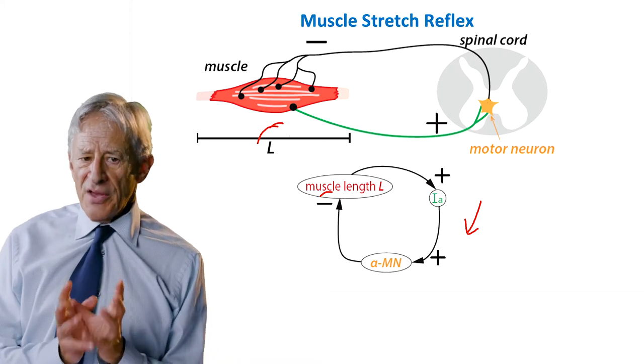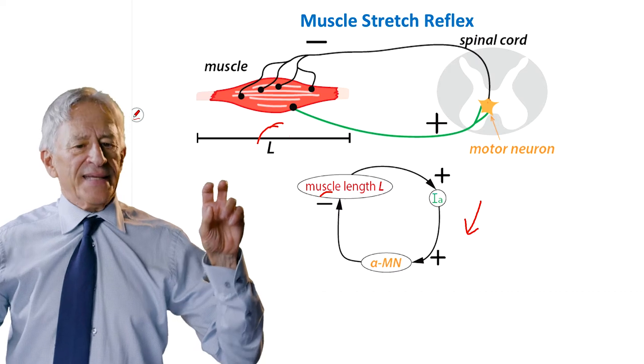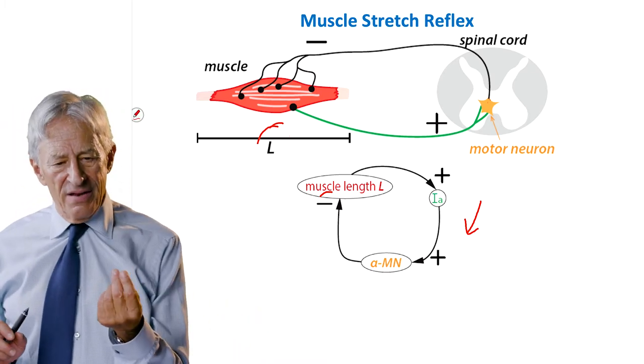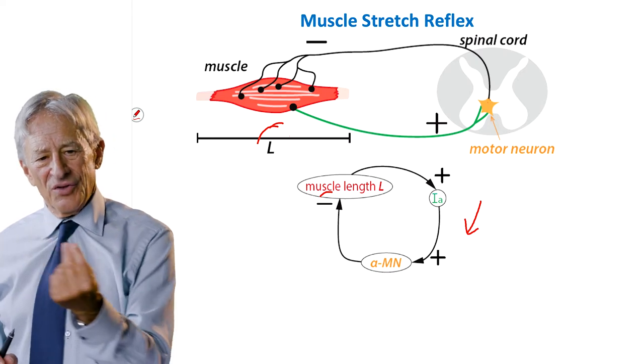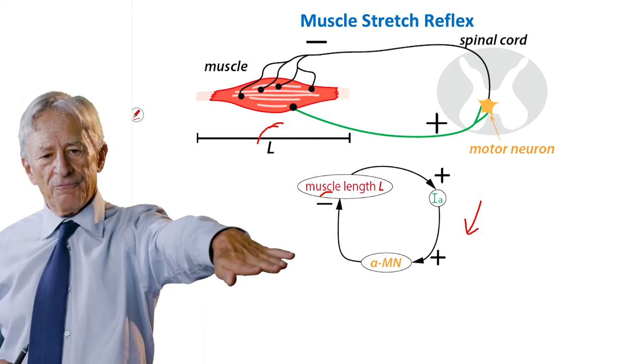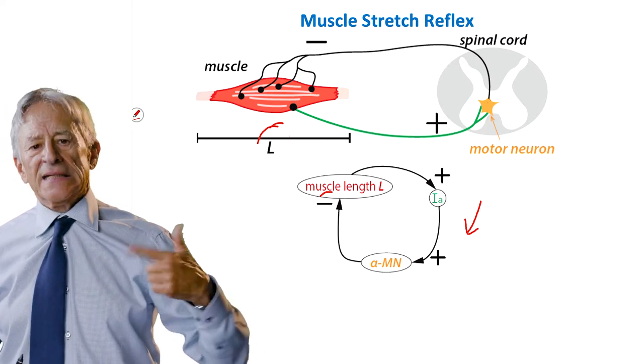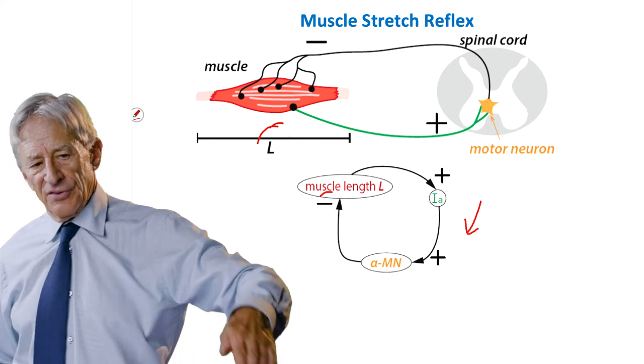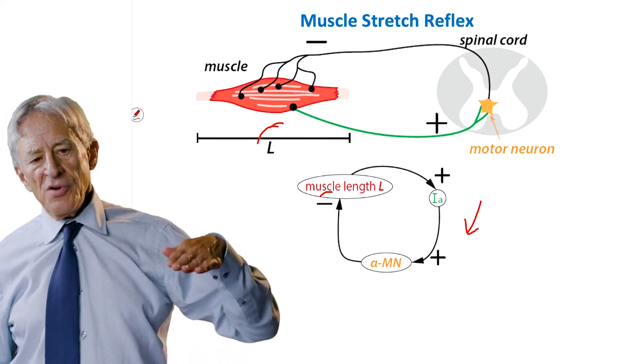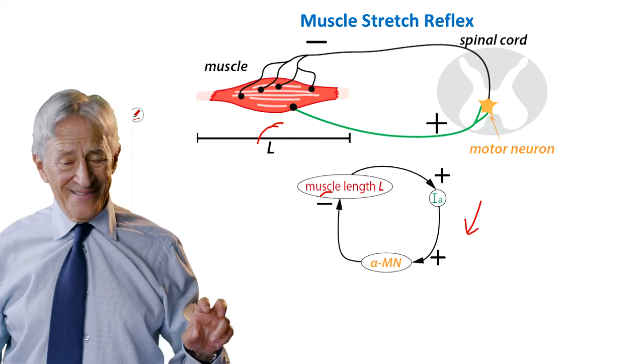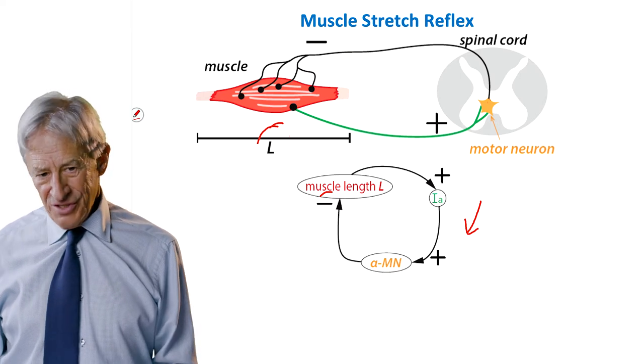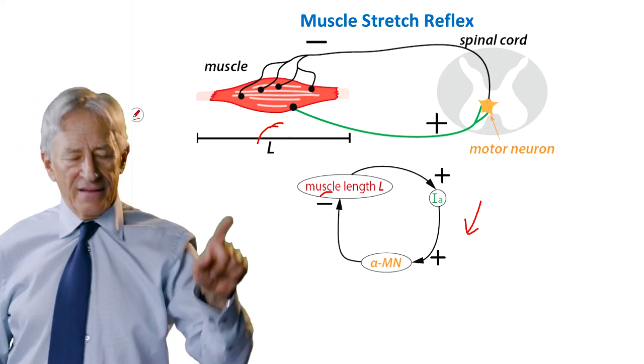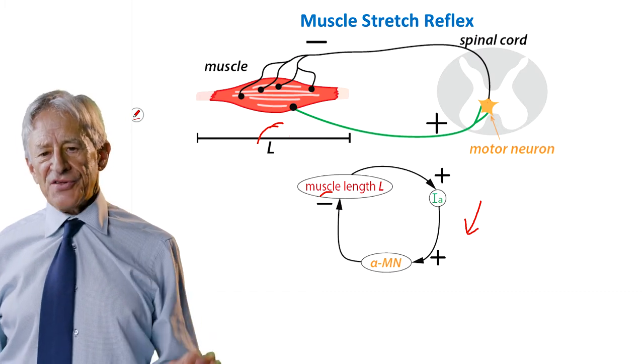For example, multiple sclerosis, MS, is a demyelinating disease. So what does demyelinating mean? Well, myelin is the insulation on the neuron, on the axon, the long axon of the neuron. And that insulation, which is myelin, enables the signal to travel nice and quickly without dissipating down the axon of the neuron. So if you have a demyelinating disease, you lose that insulation.